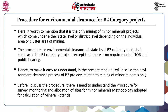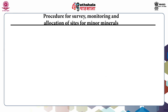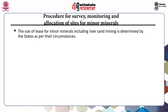Before discussing the procedure, it is necessary to understand the procedure for survey, monitoring and allocation of sites for minor minerals, and the methodology adopted for calculation of mineral potential. Number one: Procedure for survey, monitoring and allocation of sites for minor minerals. The size of leases for minor minerals including river sand mining is determined by the states as per their circumstances. The district survey reports are prepared as per the procedure given in Appendix 10 of the EIA Notification 2006 amendments.